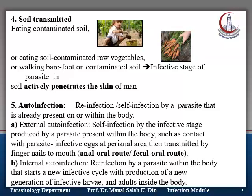Number five is through auto-infection — that's to say reinfection or self-infection by a parasite already present on or within the body. This is either an external auto-infection or an internal auto-infection. External auto-infection is self-infection by the infective stage produced by a parasite inside the body, occurring when the patient contacts the infective stage — for example, eggs present at the perianal area transmitted by fingernails to the mouth, known as the fecal-oral or anal-oral route. Internal auto-infection is where reinfection occurs by a parasite present inside the body that produces the infective stage internally, starting a new infective cycle with production of new larvae and new adults inside the body without going outside the patient.